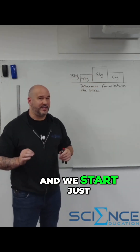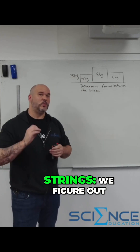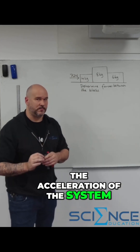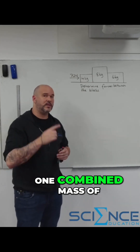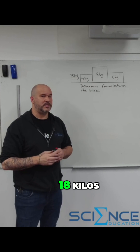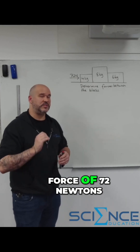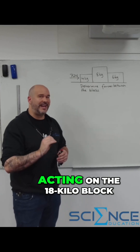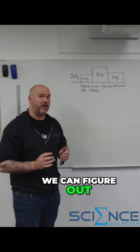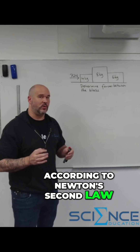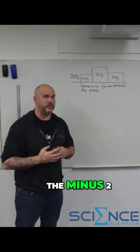We start just like we do with forces in strings — we figure out the acceleration of the system. We consider the three blocks to be one combined mass of 18 kilograms. There is one external force of 72 newtons acting on the 18 kg block, so according to Newton's second law, acceleration is 4 m/s².